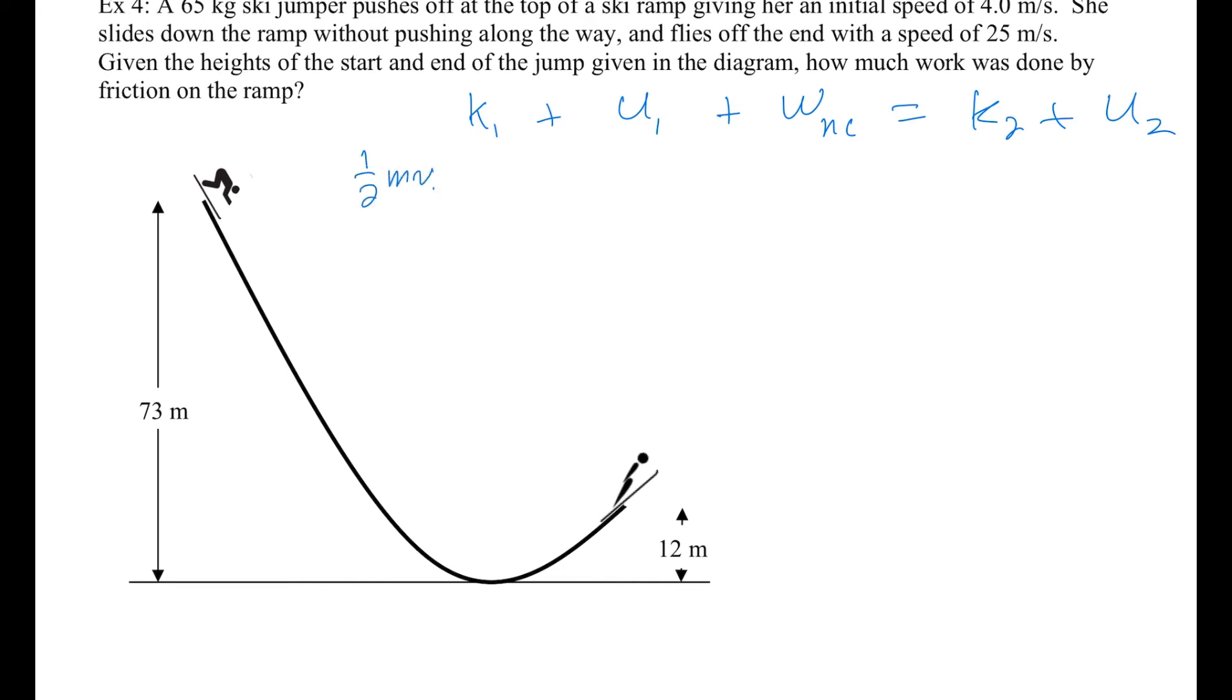So what we have here is K1 plus U1 plus the work done by the non-conservative force equals K2 plus U2. 1/2 MV1 squared plus MGH1 plus the work done by friction, WF, equals 1/2 MV2 squared plus MGH2 and none of those things are zero so we'll just start putting some values in. We know that her mass is 65 and V1 was 4.